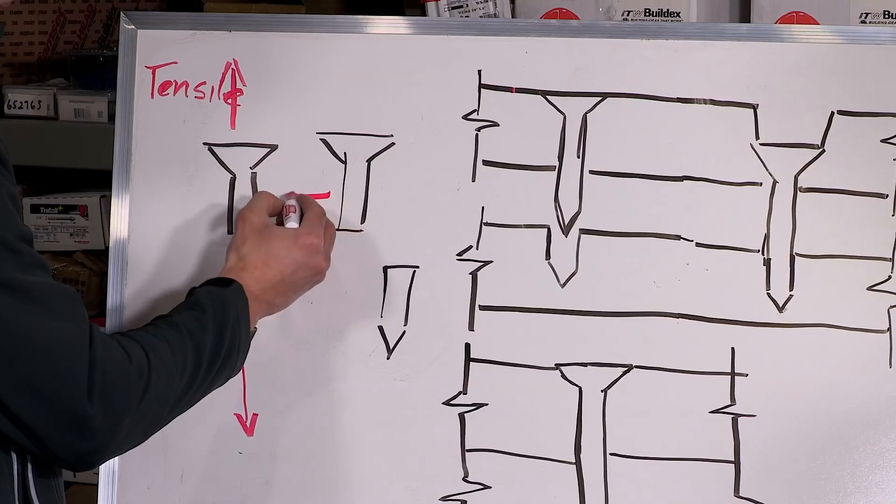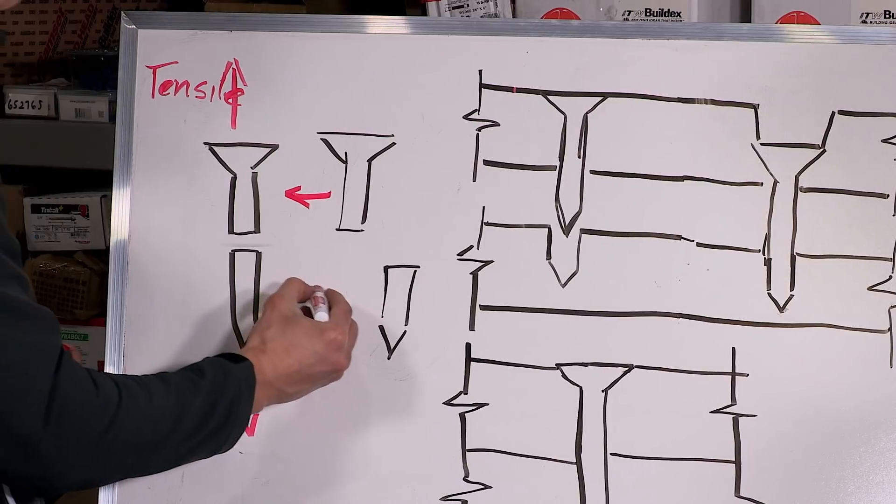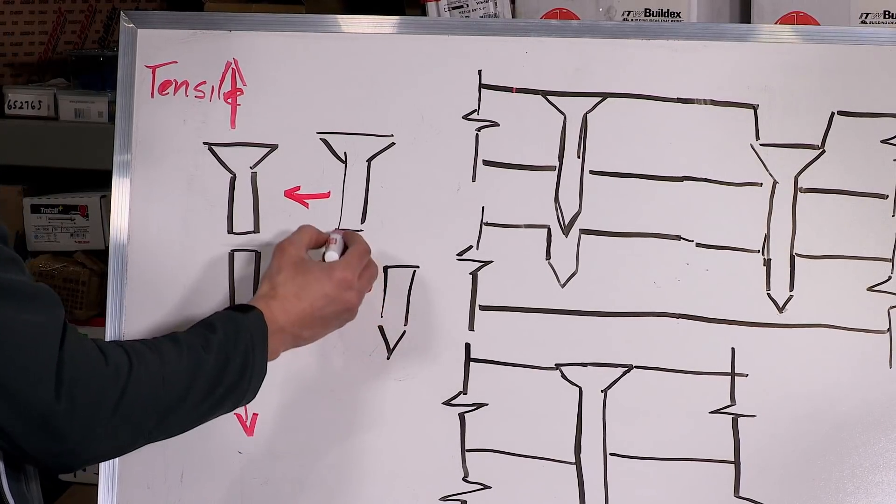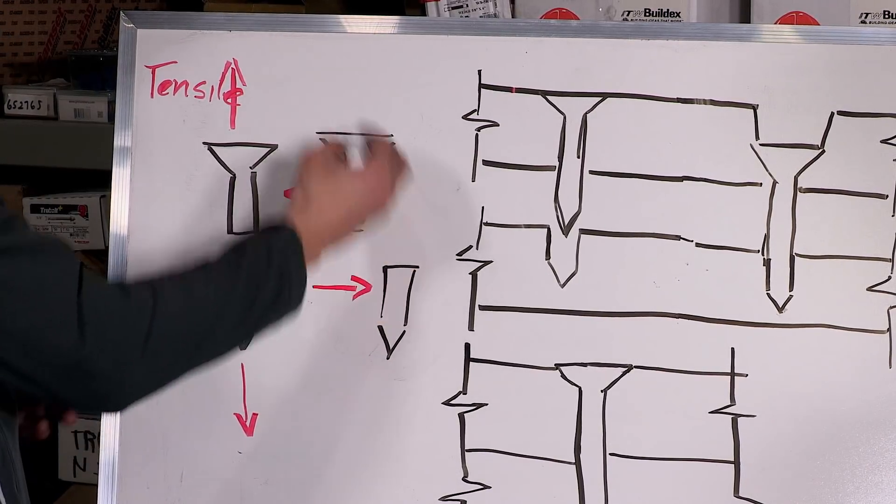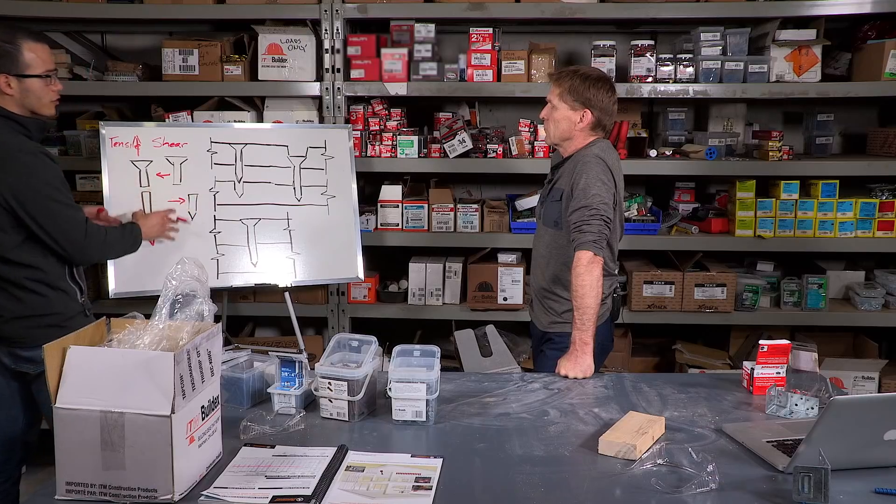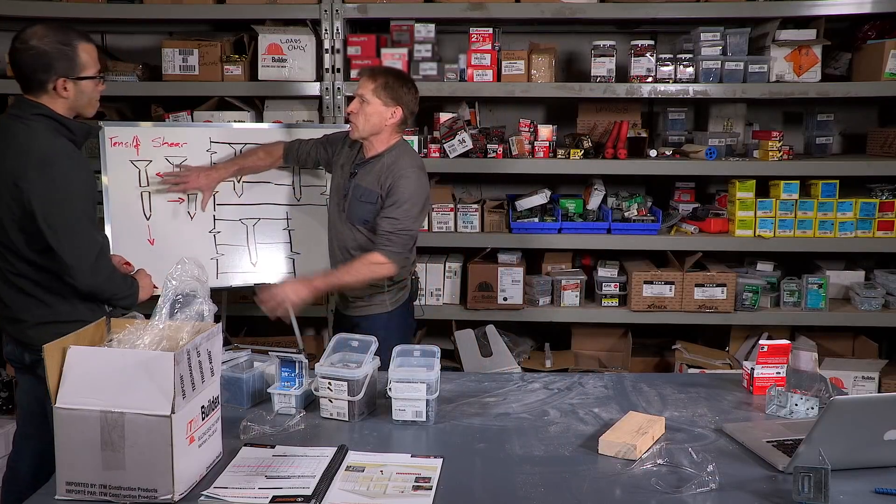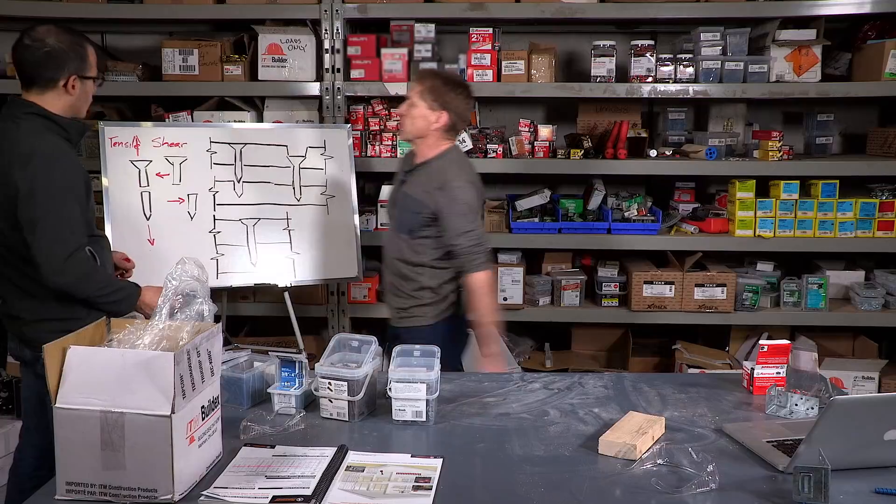The same thing you can do for shear. You would pull, let's say, half the screw in one direction and the other half in a different direction, and then you would see how much it would take to break it there. That's called shear, and again here we're only looking at the steel strength or the strength of the fastener on its own. This doesn't make any reference to the substrate that it's going into.